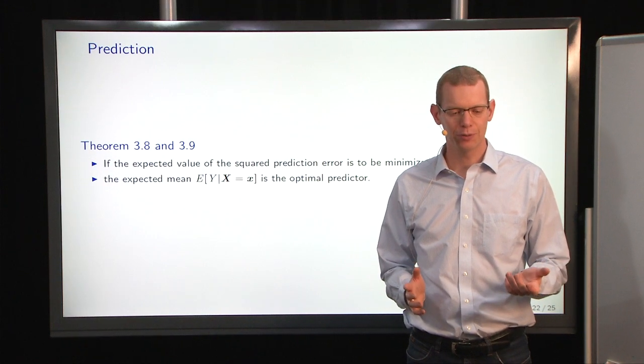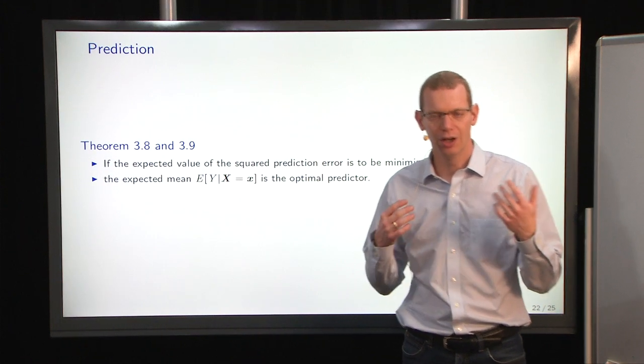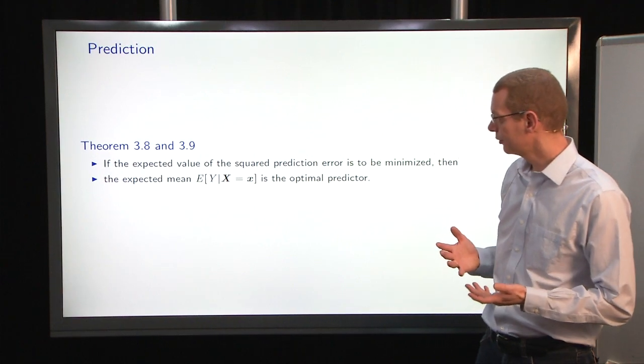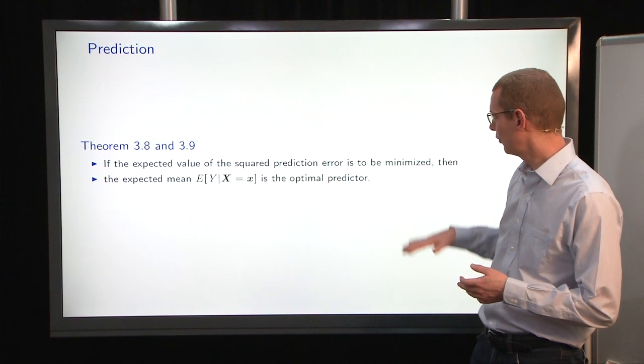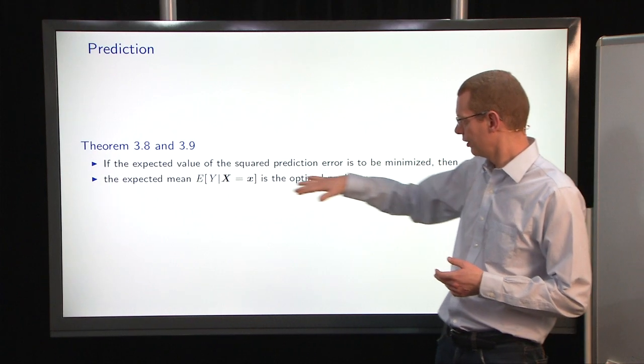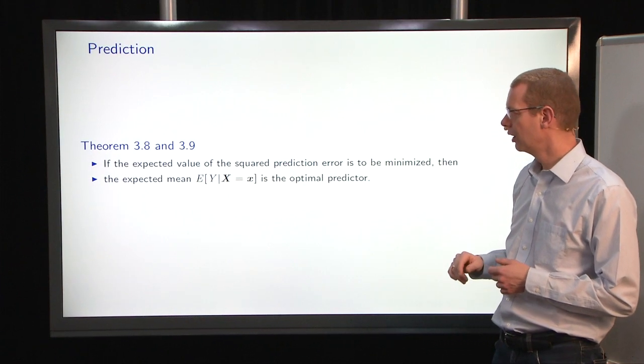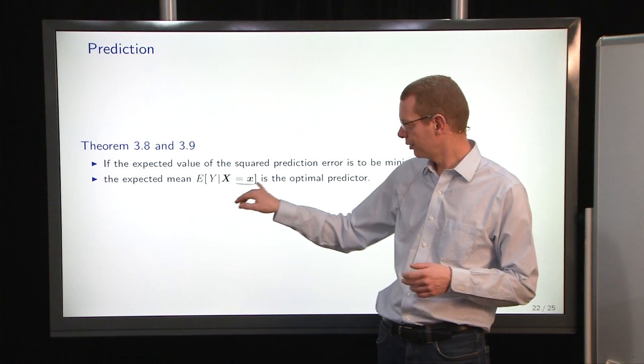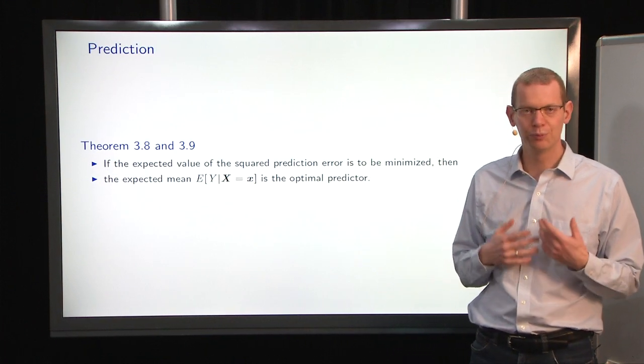The next part here is about predictions in the ordinary and weighted least squares models. So what we have to do is basically, if we want to minimize the squared prediction error, then the expected mean of Y given the predictors is the optimal predictor.